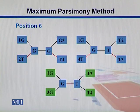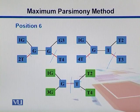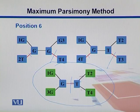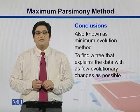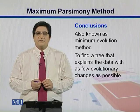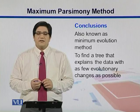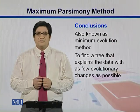Similarly, taking column six, the first tree has two changes and the second tree also has two changes, while the third tree has just one change. So this third tree is the most likely tree for this scenario as well. Maximum parsimony methods believe in minimum evolution — trees with minimum changes or minimum mutations are regarded as the correctly reconstructed trees.